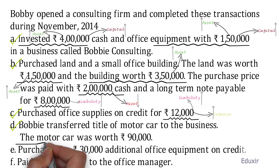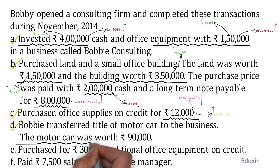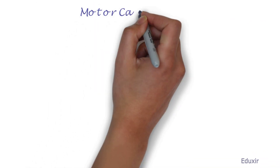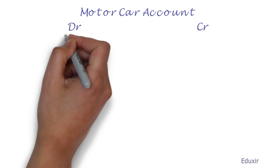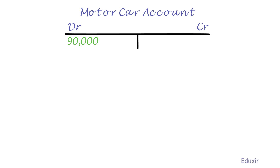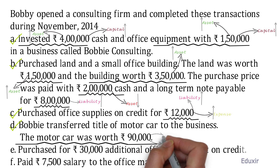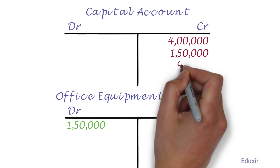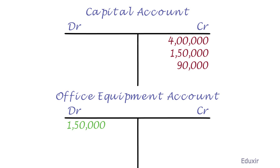Let us now deal with transaction D. A motor car worth 90,000 rupees is brought into the business, creating an asset named motor car. The rule to record an increase in the asset is to debit the corresponding asset account. We add 90,000 rupees to the debit side of the motor car account. This transaction also increases capital, as the owner has brought the asset into the business. The rule to record an increase in capital is to credit the capital account, so we credit 90,000 rupees into the capital account. That covers transaction D.